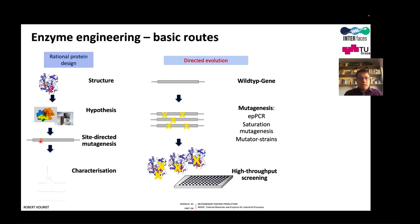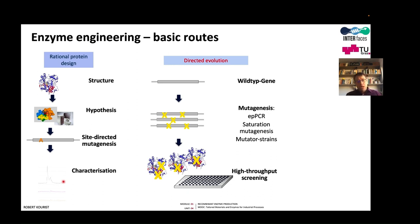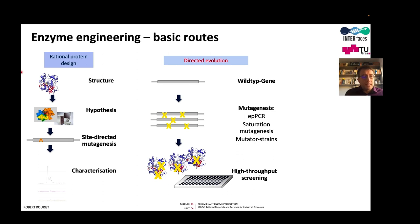We bring together all this knowledge, define a hypothesis, then introduce site-directed mutagenesis — an experiment that can be done in a few days. We then characterize the variants, as seen here in a chromatogram. The whole cycle from hypothesis to experiment is a couple of days. In a few months we can investigate hundreds of variants, though usually we are talking about tens of variants.